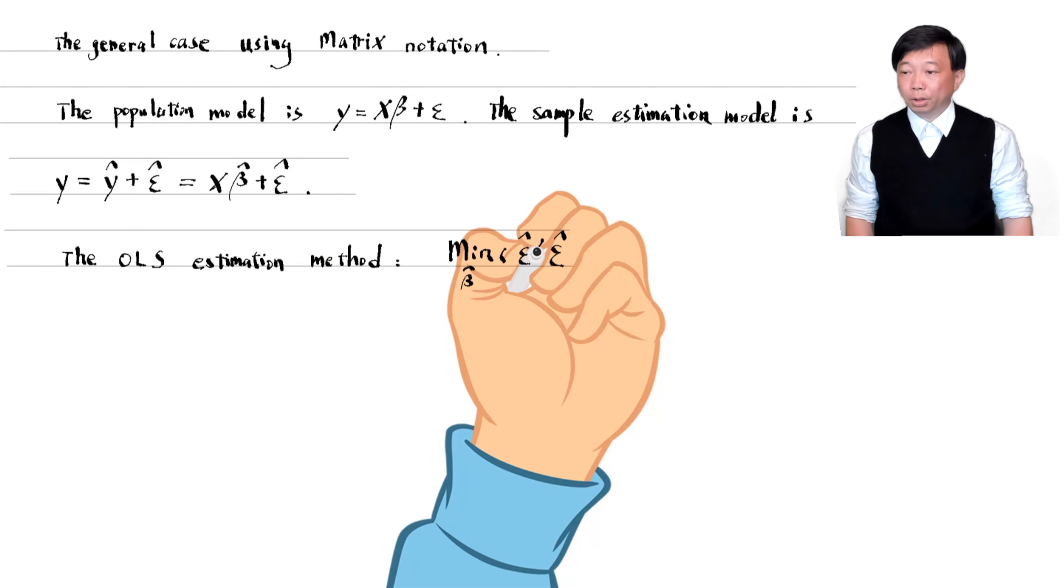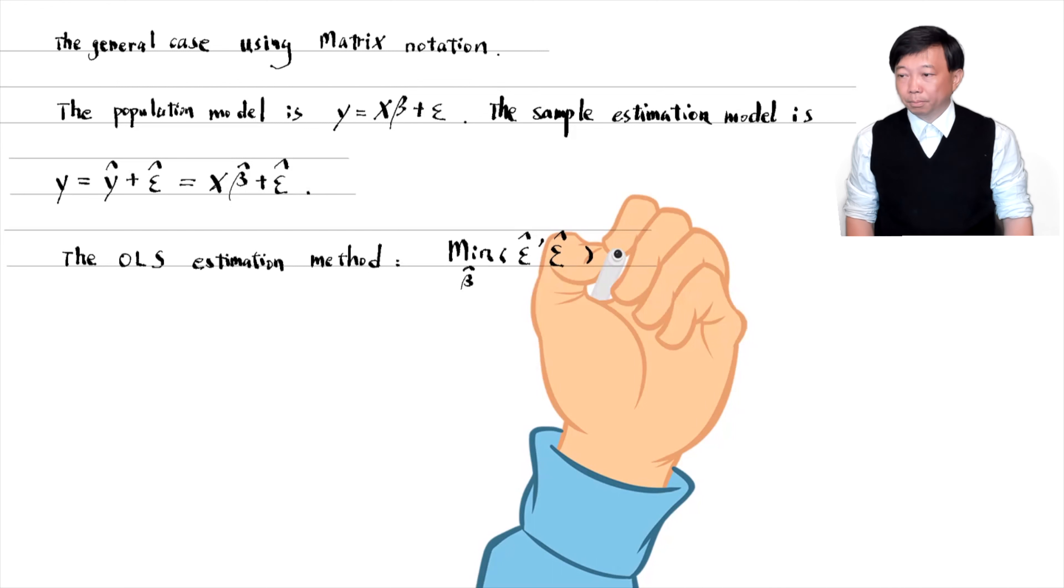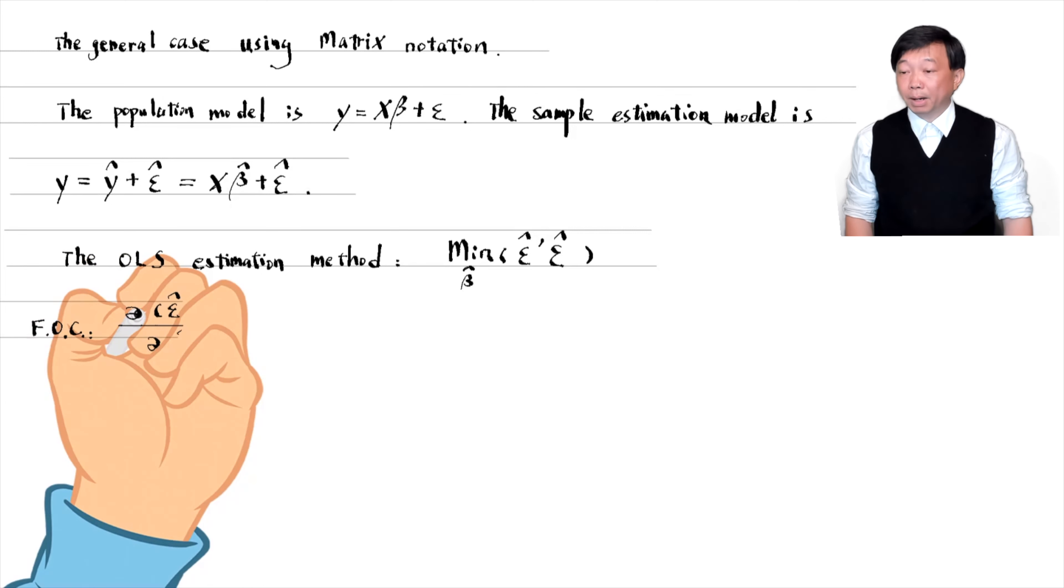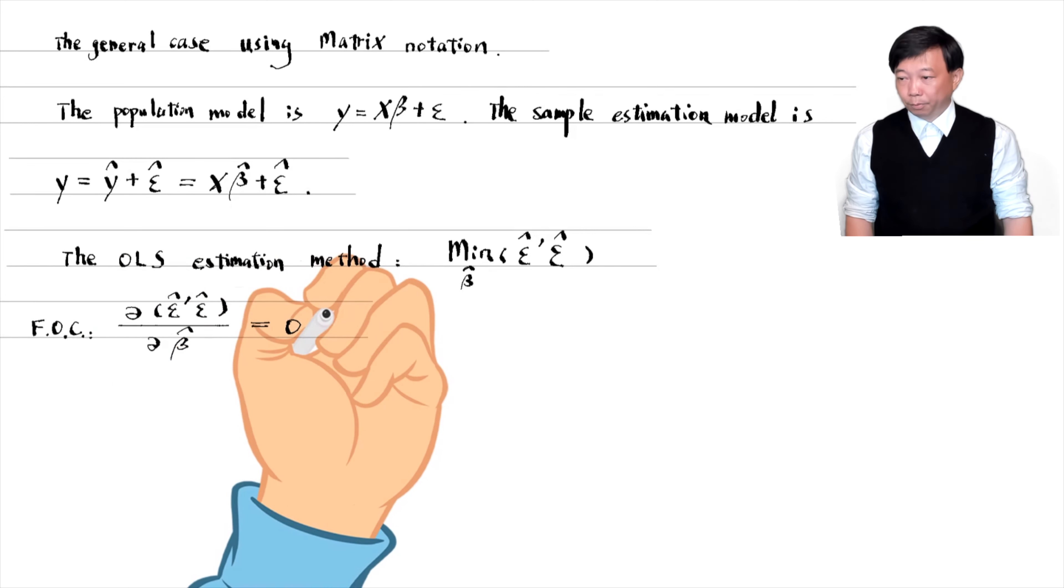The OLS is an estimation method in which the solution beta hat minimizes the sum of squared residuals. The first order condition for minimization is that the derivative with respect to beta hat equals 0.